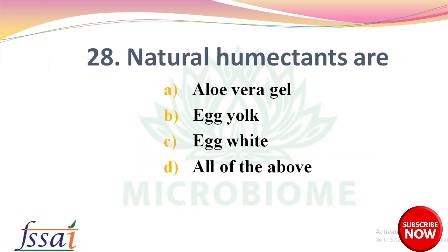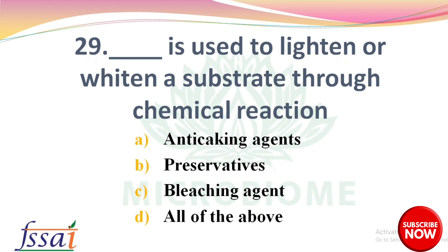Next question: natural humectants are — options: aloe vera gel, egg yolk, egg white, all of the above. The right answer is option D, all of the above. Next, dash is used to lighten or whiten a substance through chemical reaction — options: anti-caking agents, preservatives, bleaching agent, all of the above.